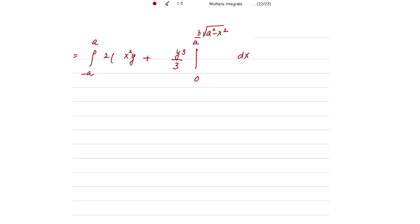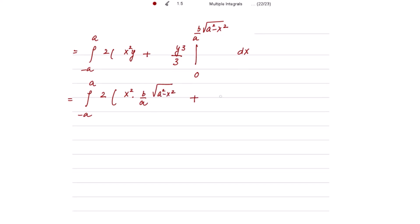Substituting the upper and lower limits of y: putting y = (b/a)√(a² - x²) gives x²·(b/a)√(a² - x²) + (b³/3a³)(a² - x²)^(3/2), and putting y = 0 gives zero. So the expression becomes 2 times the integral from -a to a of [x²·(b/a)√(a² - x²) + (b³/3a³)(a² - x²)^(3/2)] dx.